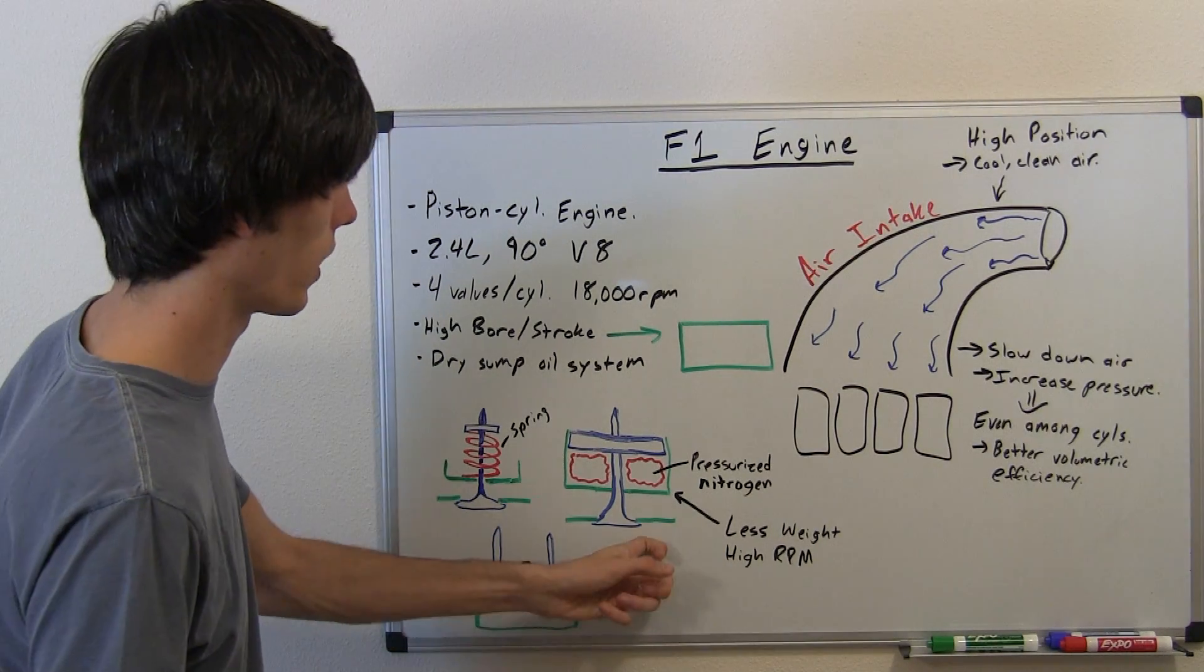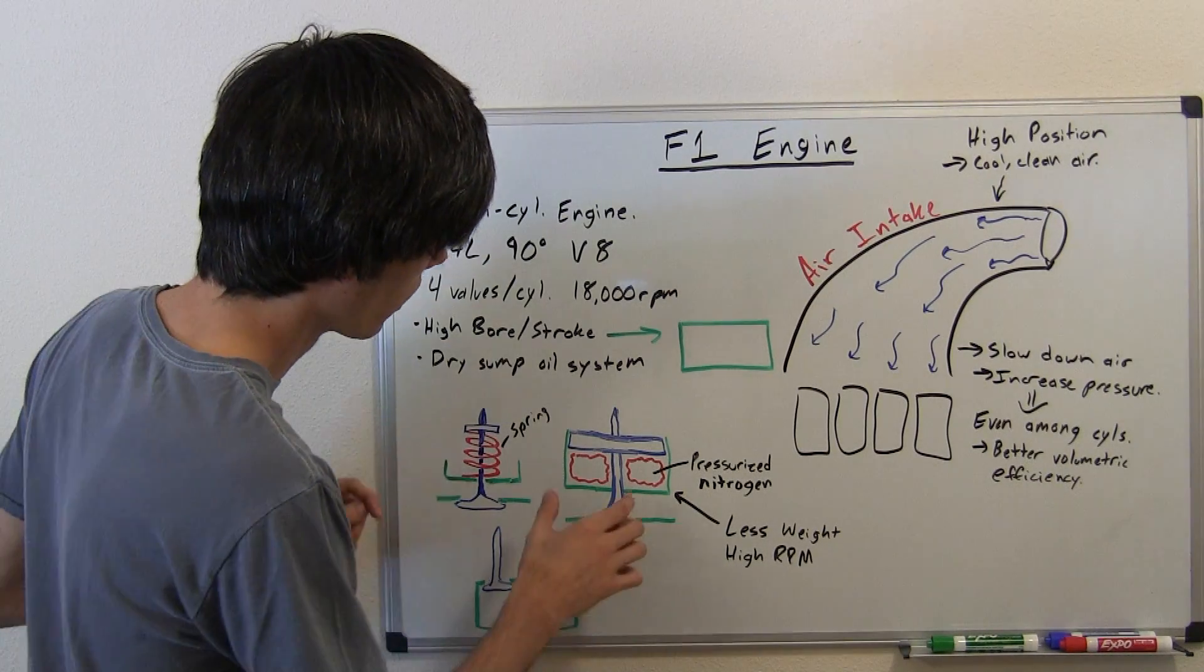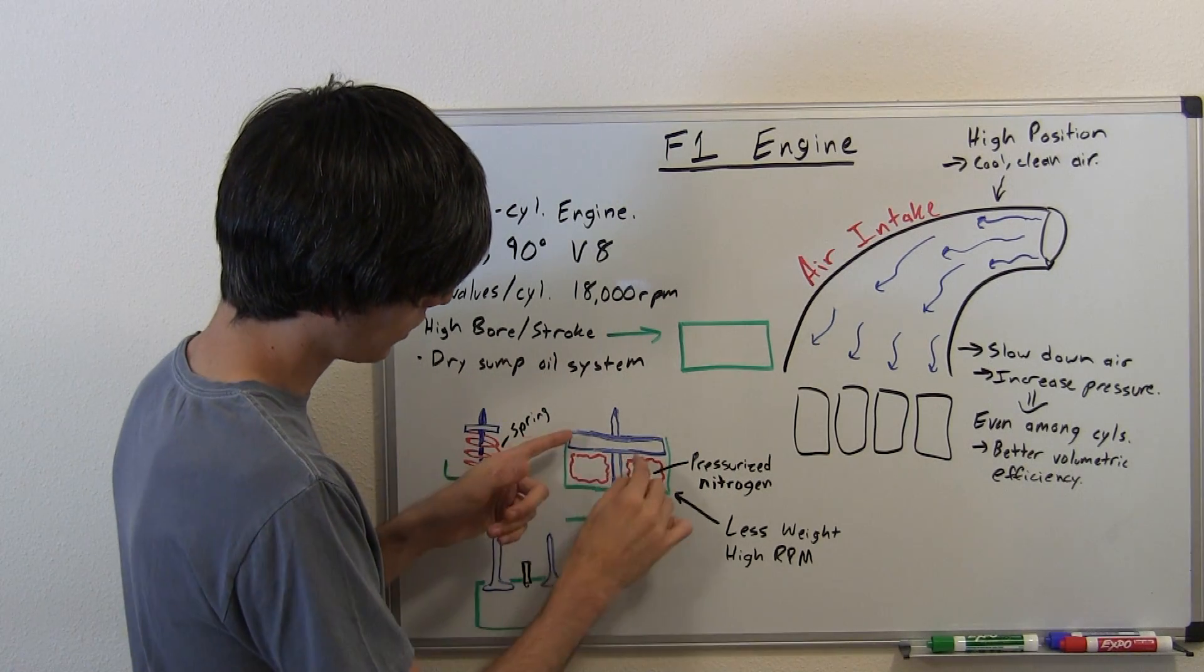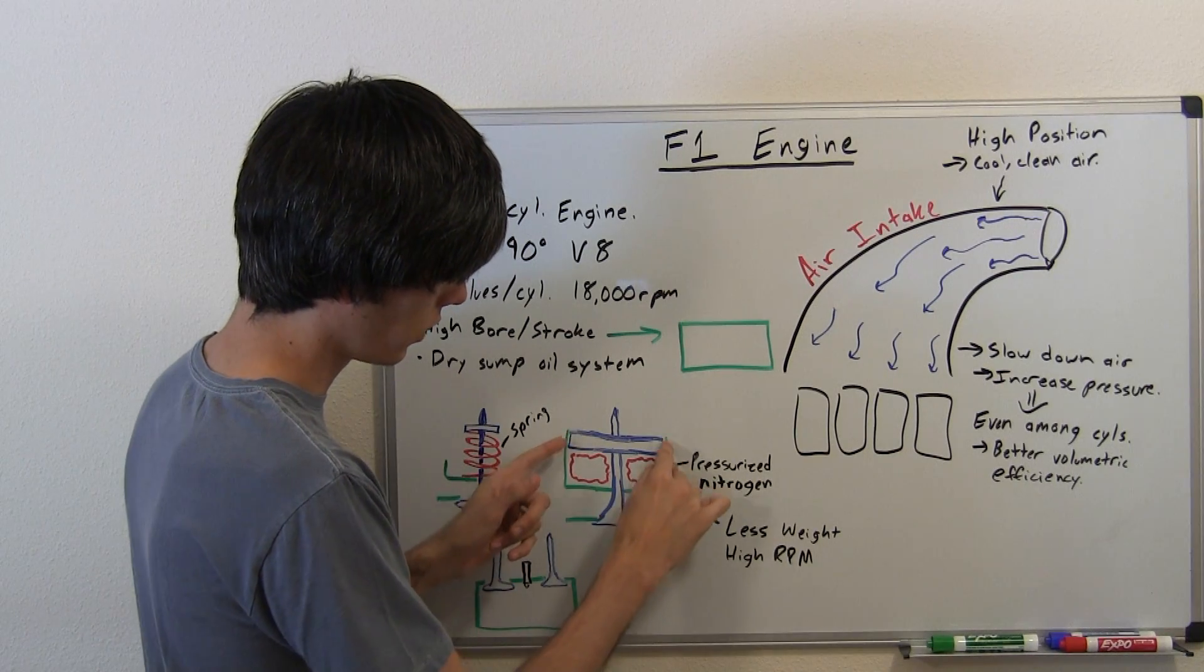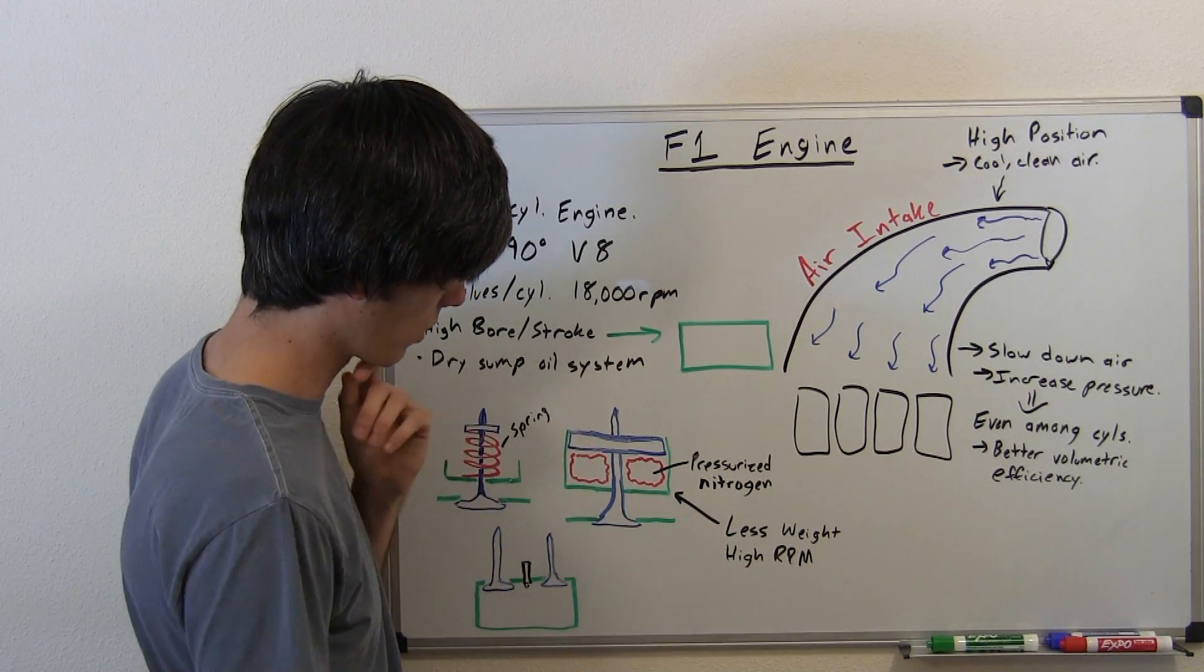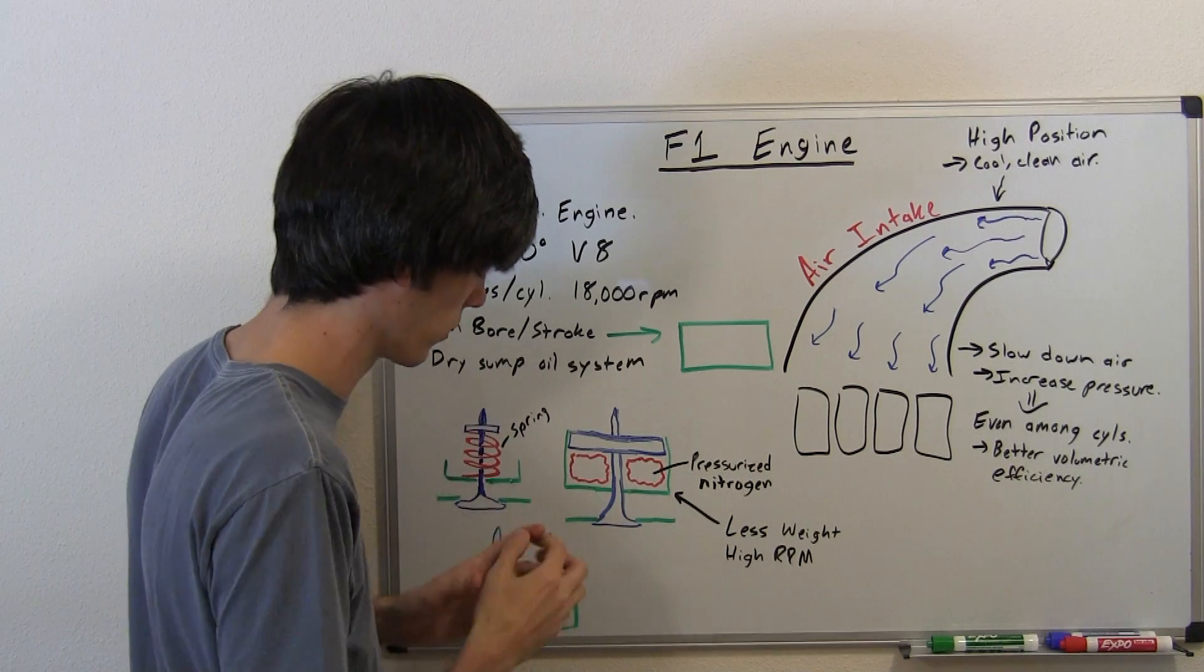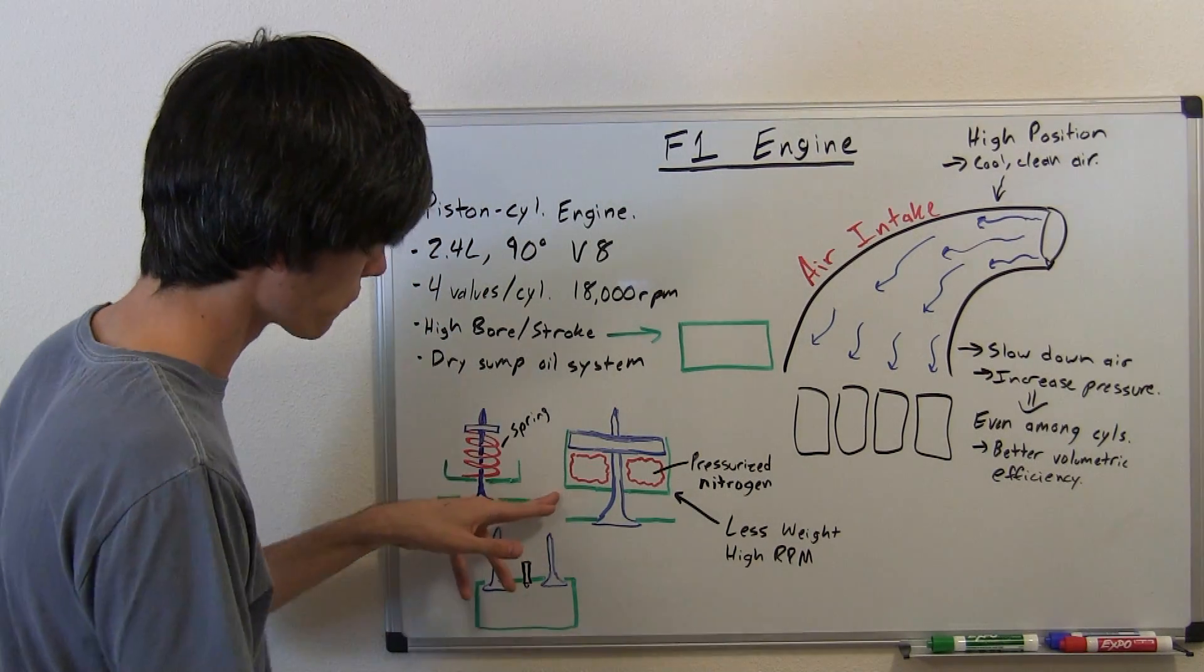Well, in Formula One, you've got pneumatic valves. So, pneumatic air pressure. So what's going on with that? So instead of a spring, you have sort of a piston cylinder device. And so this piston cylinder, this piston is attached to the valve and then you've got the cylinder here, which is full of pressurized nitrogen. Nitrogen because it keeps its pressure fairly constant with differences in temperature. You don't want water and stuff like that in there for corrosion. So you use something like nitrogen.